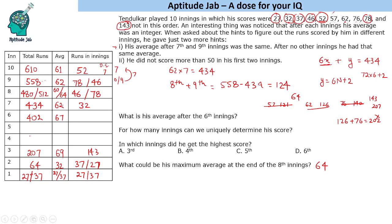For the 4th innings he needs to make the total a multiple of 4, which requires an odd number — obviously 57. Adding 57 gives a total of 264 and an average of 66. For the 5th innings he needs a multiple of 5, so the only possibility is 76. Adding 76 gives 340, an average of 68. The remaining number is 62, which he scores in the 6th innings to reach a total of 402 and an average of 67. This is the order in which he scored the runs.